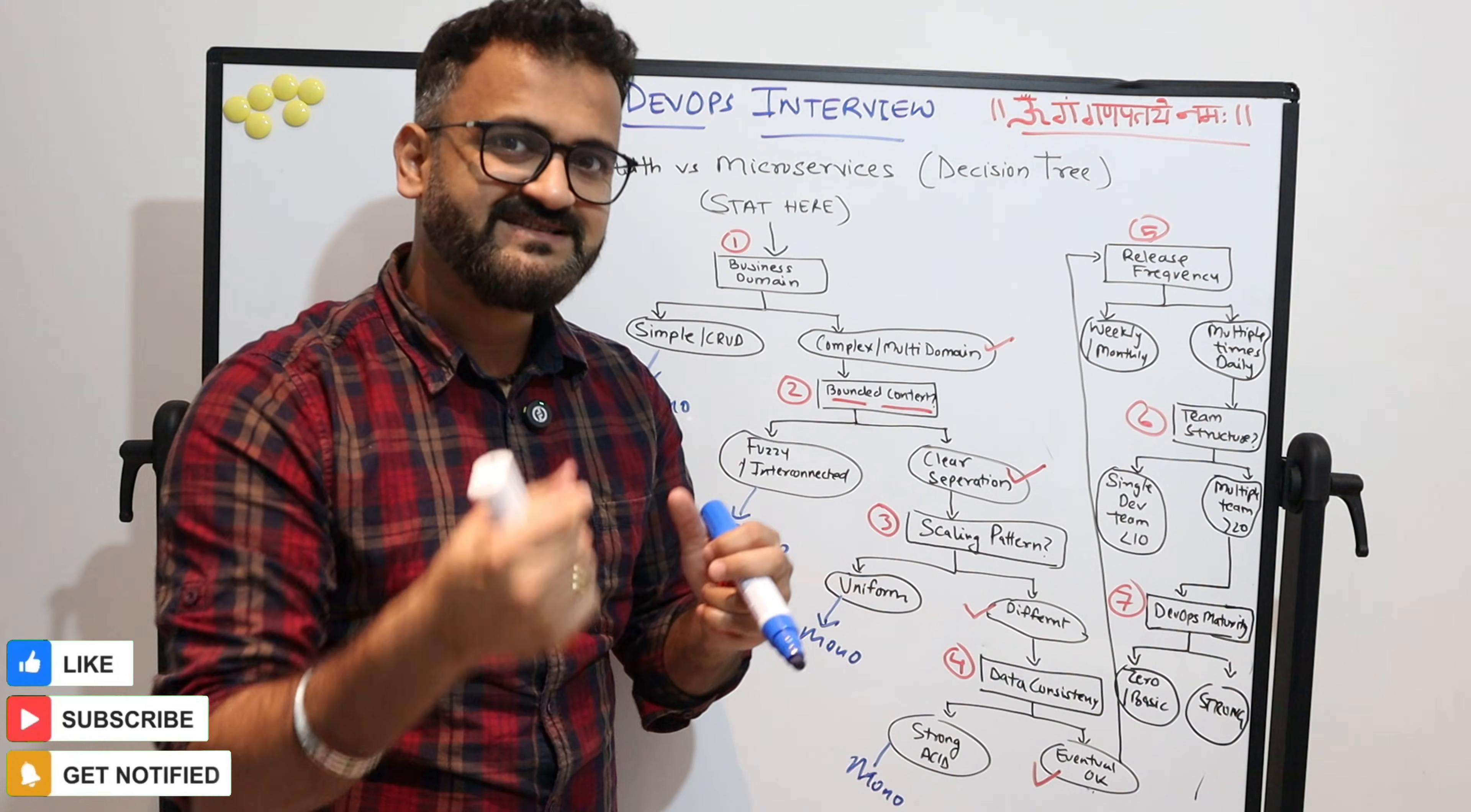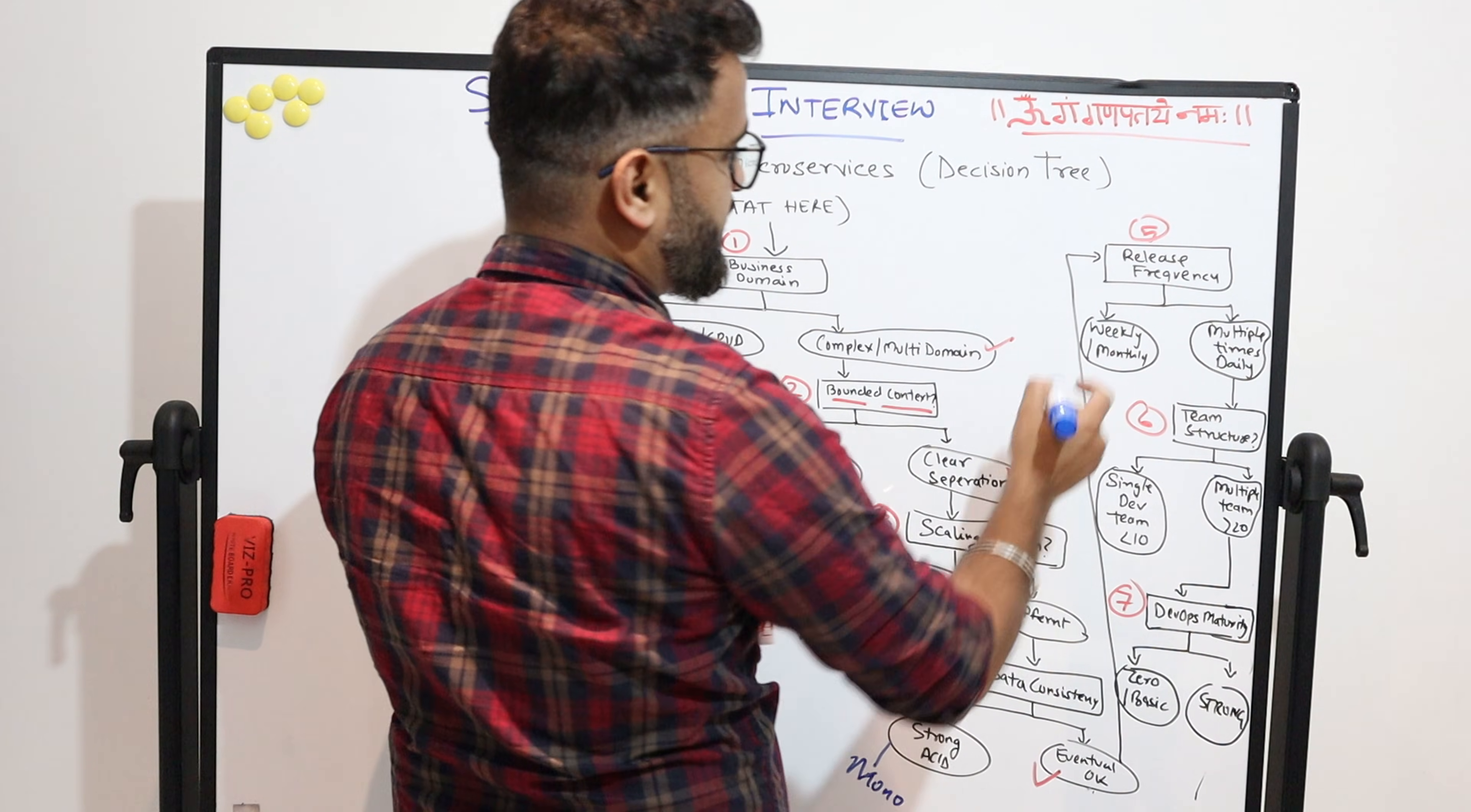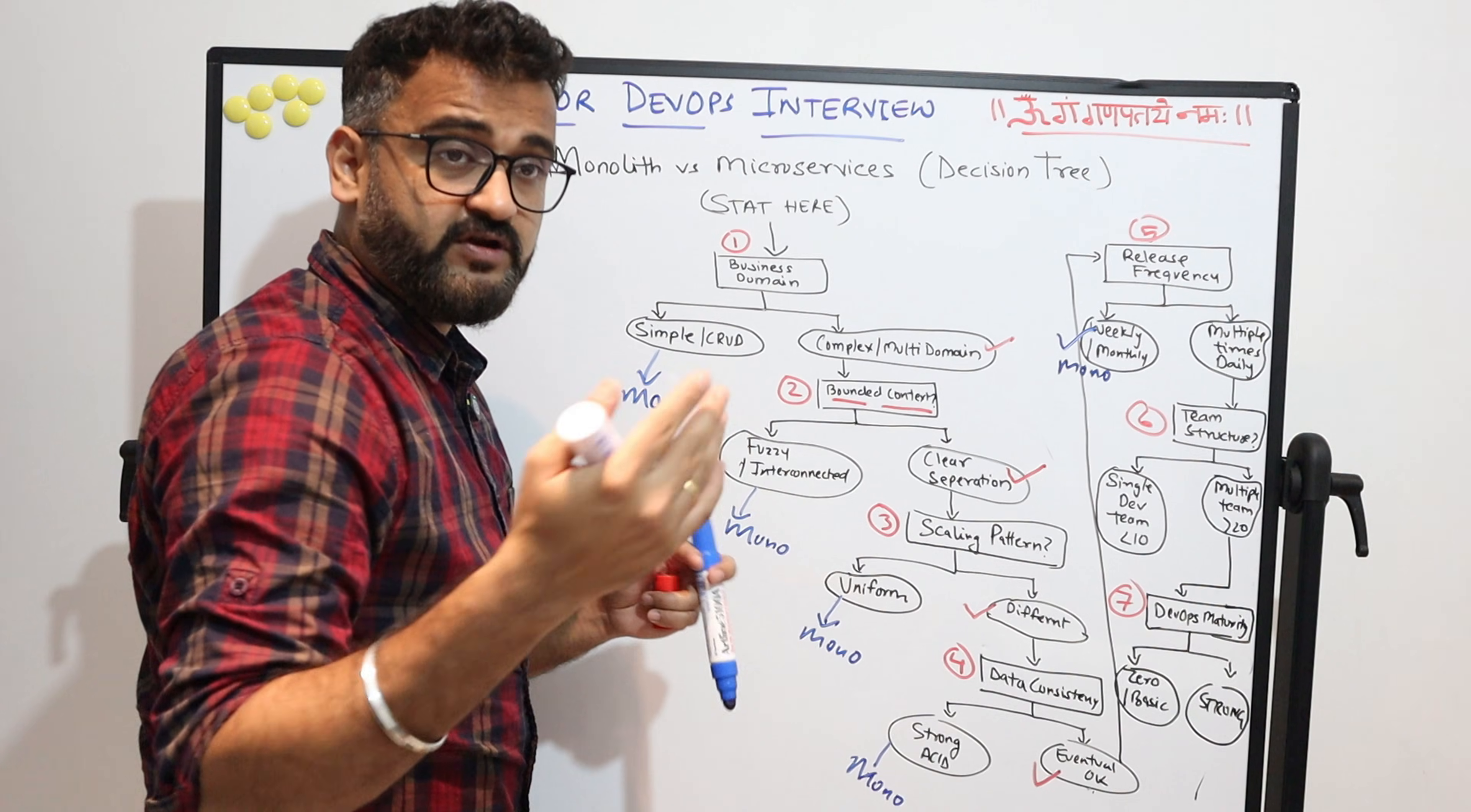But if eventual consistency is okay, then it is a tick for being a microservice. Because generally in microservices architecture, if eventual consistency is there, it helps. You do not need to reflect the data transactions immediately in multiple microservices which you will be building. Release frequency is very, very important.